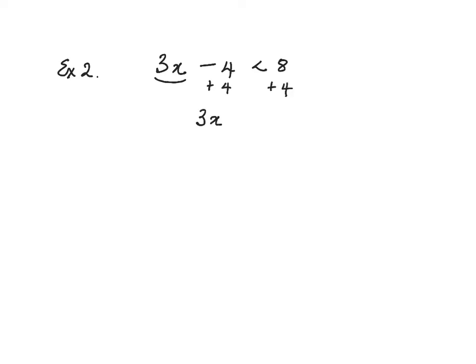3x then is less than 8 plus 4 is 12. Now, we can't leave it like that because we want x, so we divide by 3. x then is less than 12 over 3, and x is less than 4.